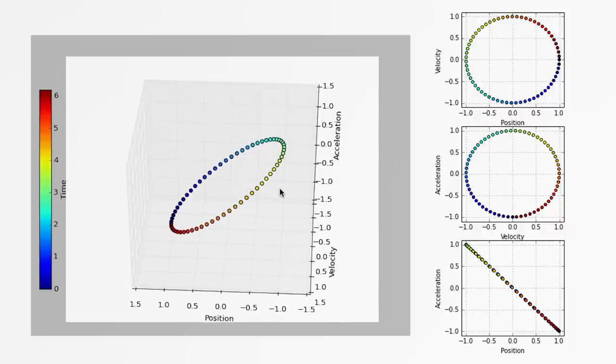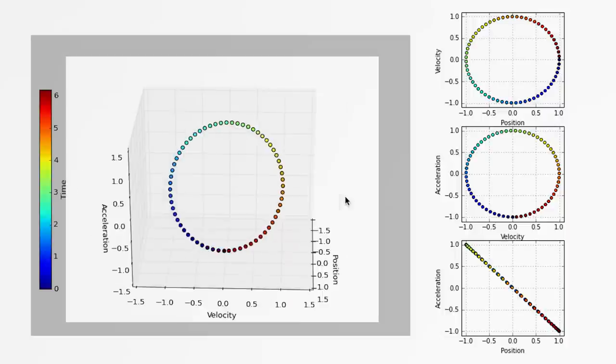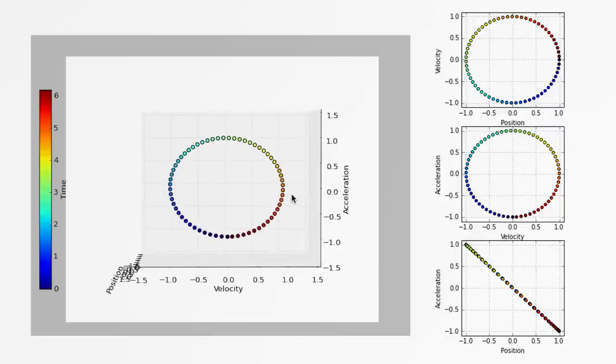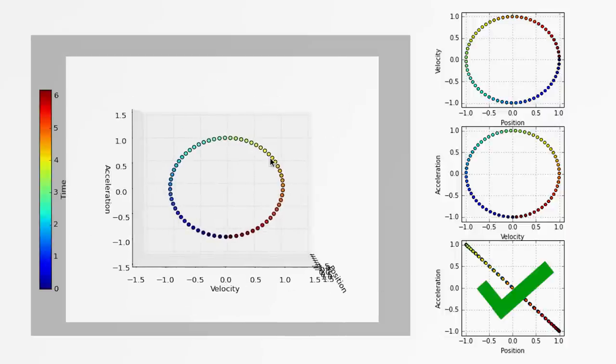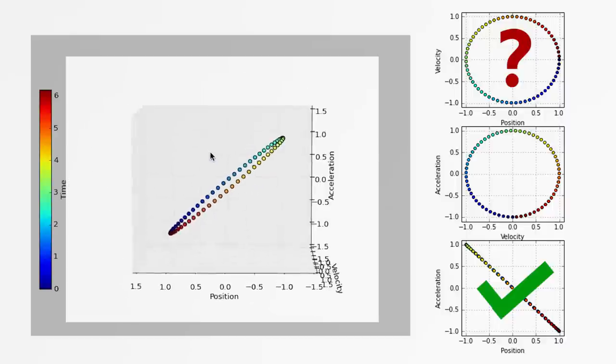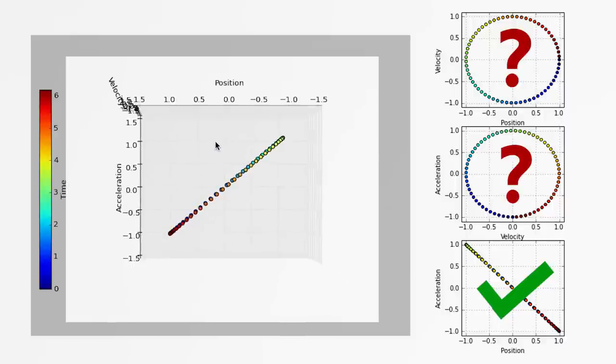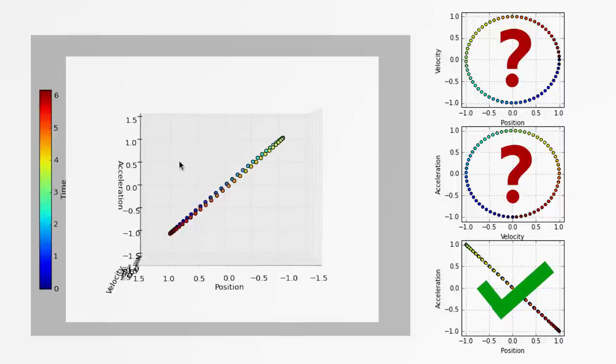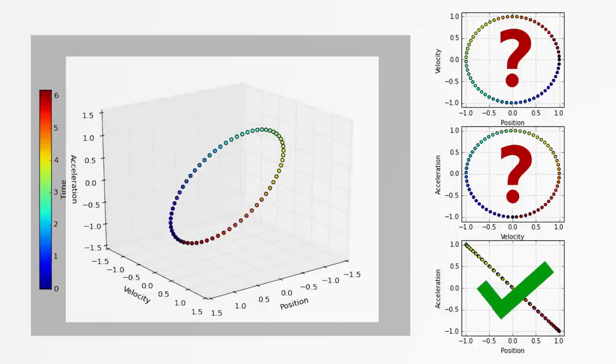This is because, as we showed in part one, springs push back linearly against their displacement, as quantified by Hooke's law. But why do our position velocity and velocity acceleration graphs form circles? What could a circle possibly have to do with a mass on a spring moving back and forth?